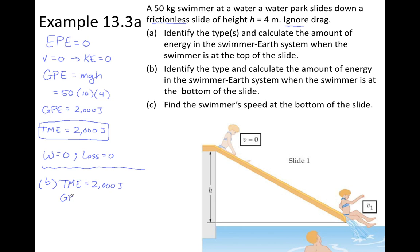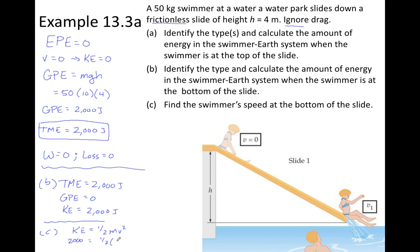At the bottom of the slide, the gravitational potential energy becomes zero because she has reached that reference level. That means all of the energy had to turn from gravitational potential into kinetic. The swimmer maintains the total amount — losing all the potential energy stored in the system, which transforms into kinetic energy. If we know the amount of kinetic energy, we can calculate speed. With 2000 joules of kinetic energy and a mass of 50 kilograms, the swimmer's speed works out to 8.94 meters per second.